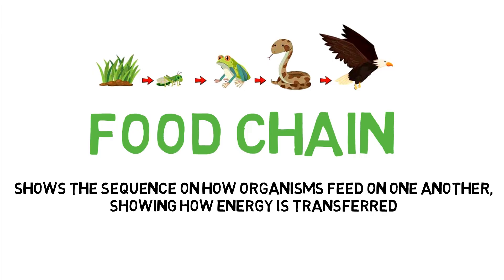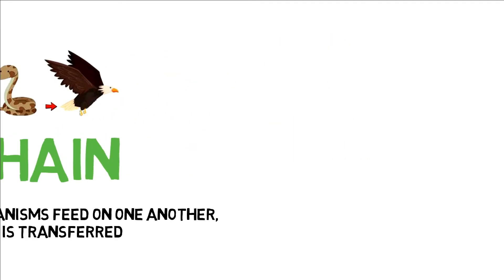Hindi pwedeng kakainin ng grasshopper ang frog dahil ang araw ay patungo sa frog. Kung saan nakatutok ang araw, yun ang kakain sa organism na sinundan niya. May kita natin dito na isang linya lang ang ating food chain.